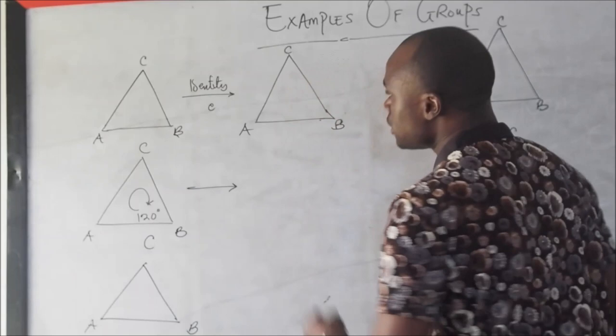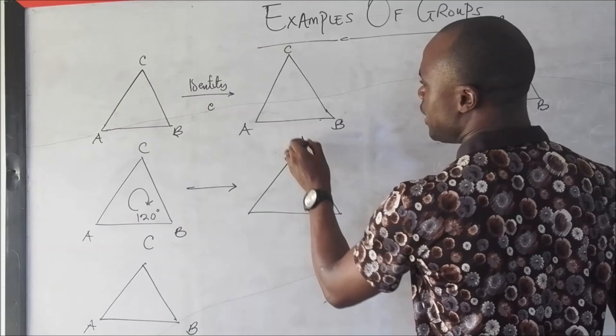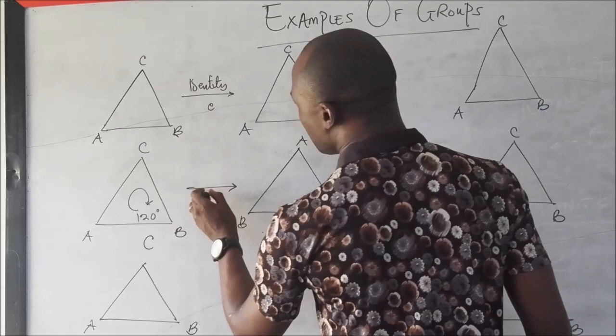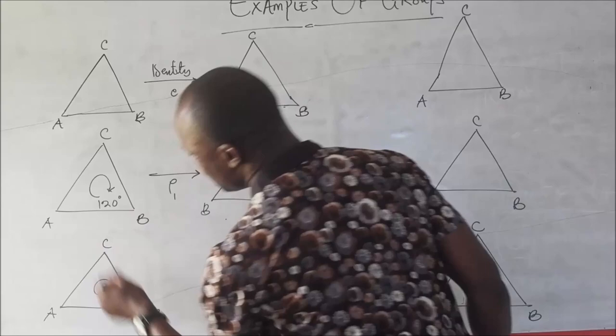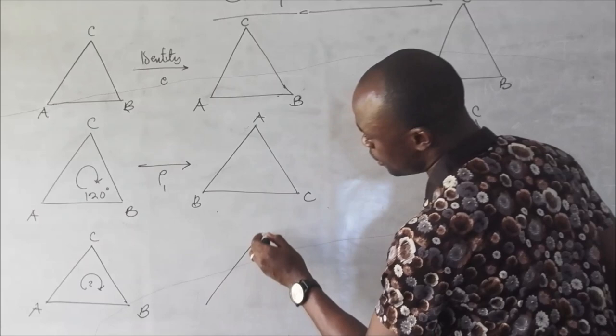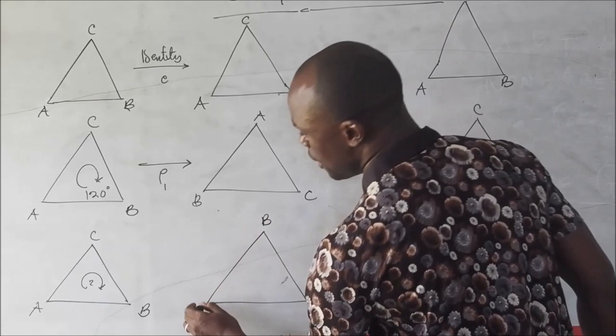After rotating 120 degrees clockwise, I'm going to be having A here, C here, and B here. So I can call this rotation rho 2. Then rotating further, I'm going to be having A here, and B and C here — I can call this rotation rho 2 as well.